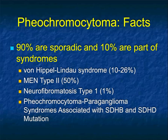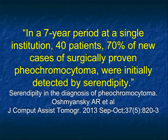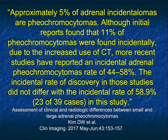The syndromes most commonly considered are probably Von Hippel-Lindau and MEN type 2. In a seven-year period at a single institution, 70% of new cases of surgically proven pheos were detected by serendipity. We used to think pheos were something patients presented with due to hypertension, but the majority - 70% - are picked up incidentally. About 5% of adrenal incidentalomas are pheos, and with increasing use of CT, the numbers are now in the 60-70% range.